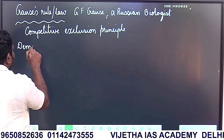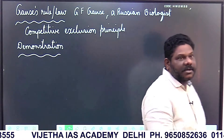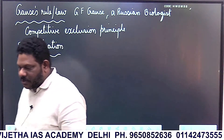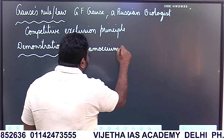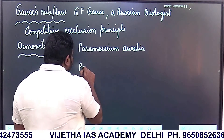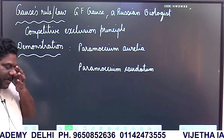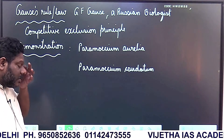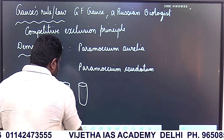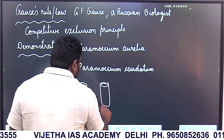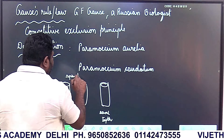Demonstration of Gauss's rule in laboratory conditions. They took two different protozoan species — Paramecium aurelia and Paramecium caudatum — and cultured them in separate mediums, and also cultured them together in the same medium. Here they are grown separately in the same culture medium with the same food and space.